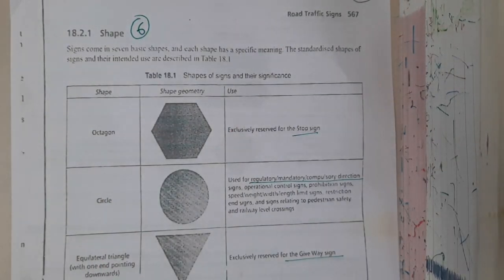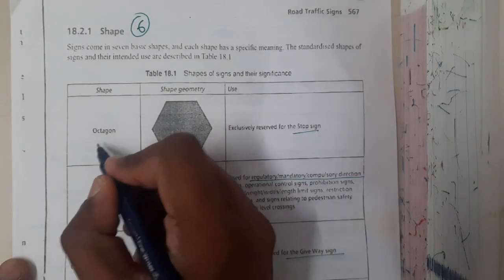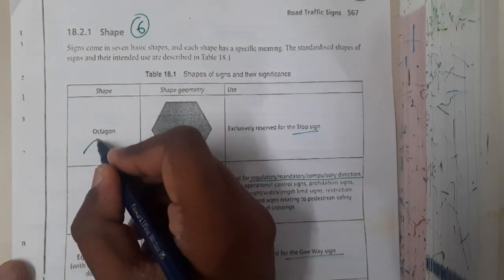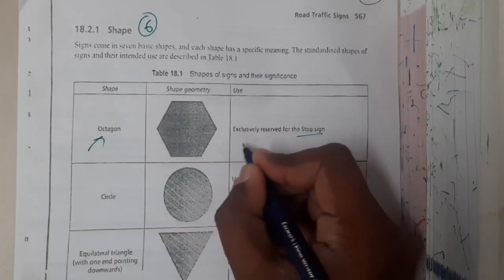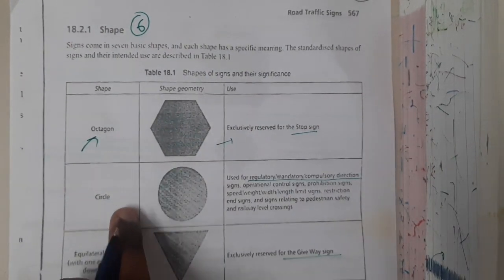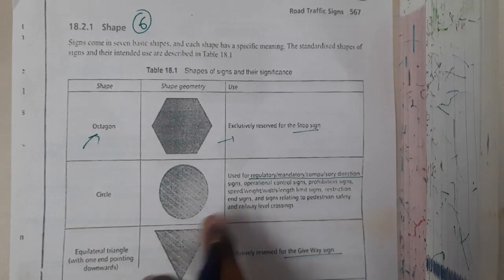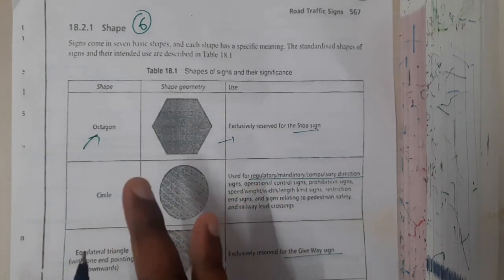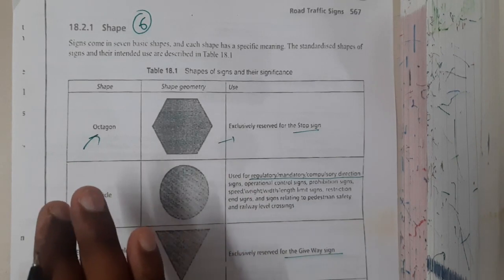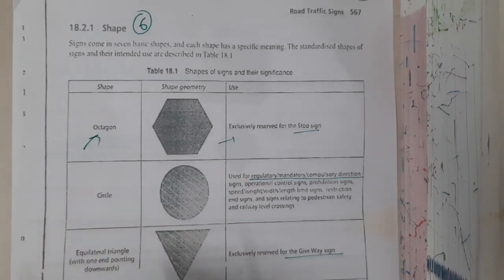If you recall, I told you the octagon is only used for stop signs. That is the exact thing which is written here also. Similarly, circles are always used to show the mandatory signs or compulsory signs or regulatory signs.